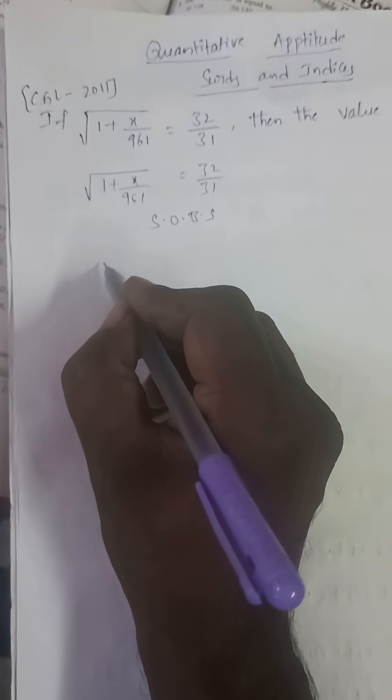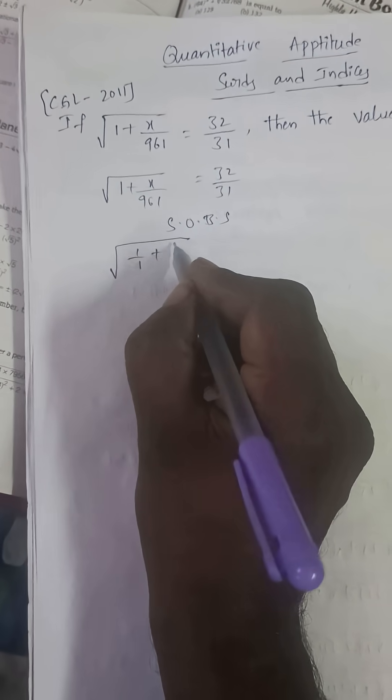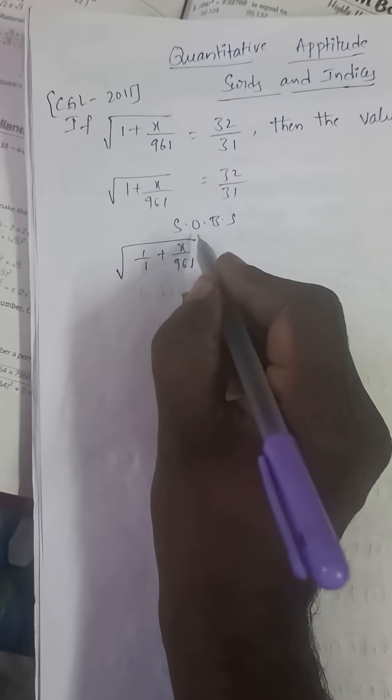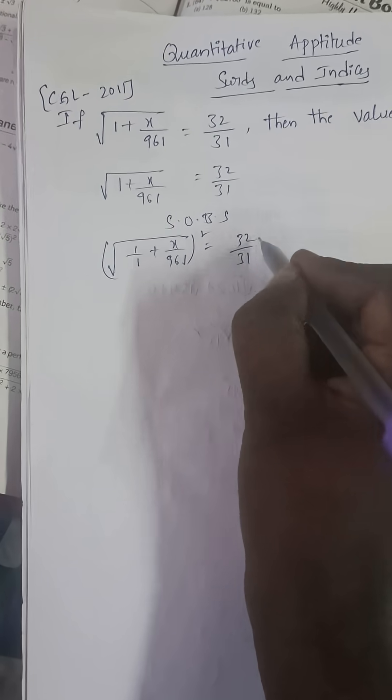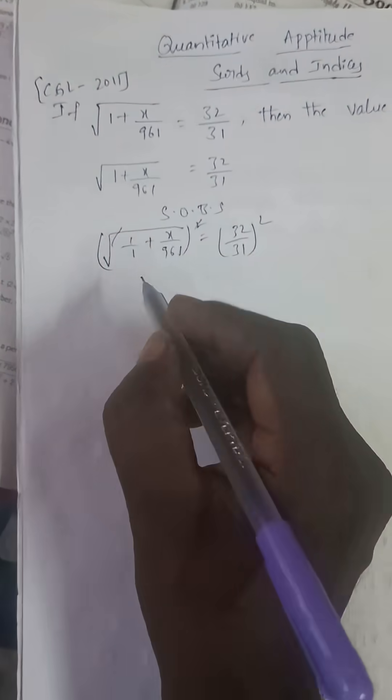Square root 1 we can write as 1 by 1. So, x by 961 whole square is equal to 32 by 31 whole square. Square root cancels.